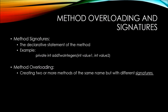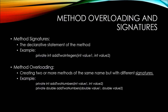Method overloading is where you can create two or more methods of the same name, but with different signatures. For example, if we have a method called AddTwoNumbers that returns an int and takes two integer parameters — value1 and value2 — this performs similarly to the AddTwoIntegers method. However, we could have another declaration of AddTwoNumbers where the return data type is double and the two parameters are both of type double. Both of these methods can coexist inside the same class, despite having the same name.